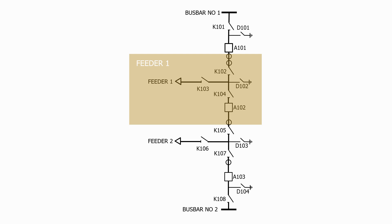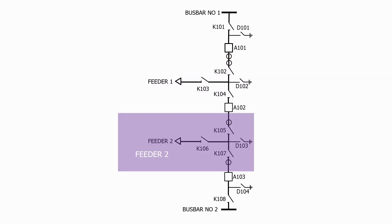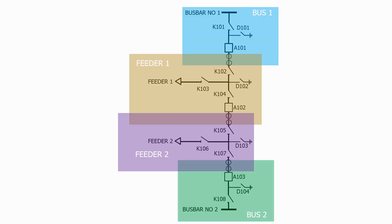What about the zone for feeder 2? Well, this follows the same principles as feeder 1. We need to overlap this protection zone with the others, so let's put the top current transformer in this position and the bottom current transformer here. Every piece of busbar and equipment on the circuit is now covered by one of the protection zones.